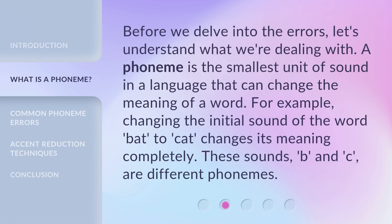Before we delve into the errors, let's understand what we're dealing with. A phoneme is the smallest unit of sound in a language that can change the meaning of a word. For example, changing the initial sound of the word 'bat' to 'cat' changes its meaning completely. These sounds — b and c — are different phonemes.